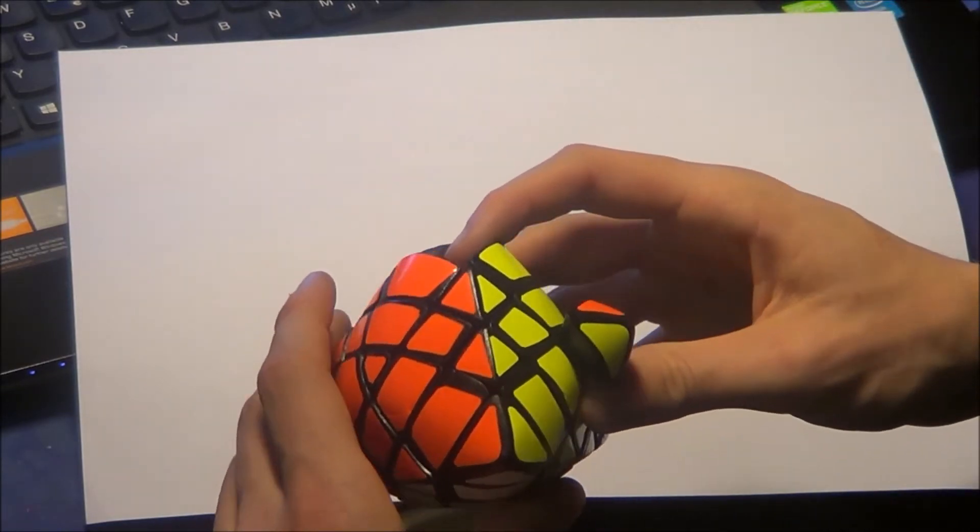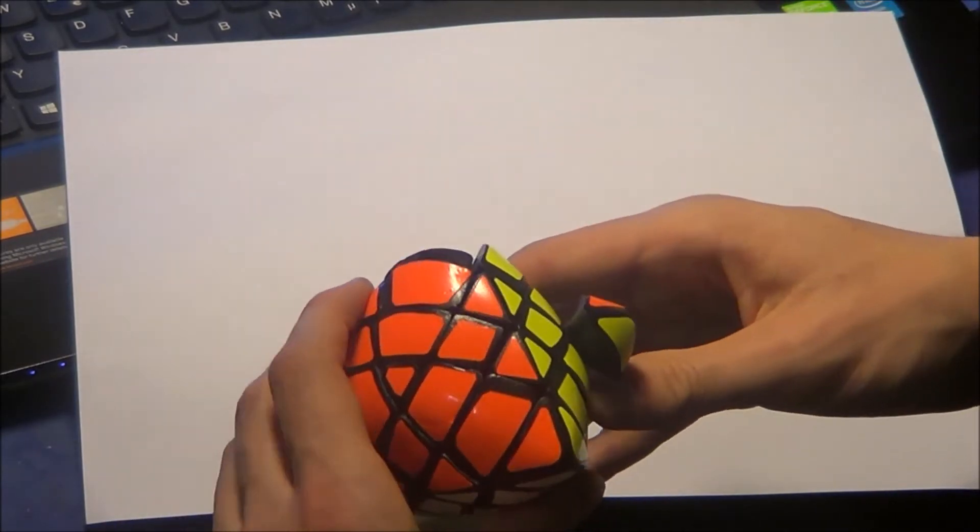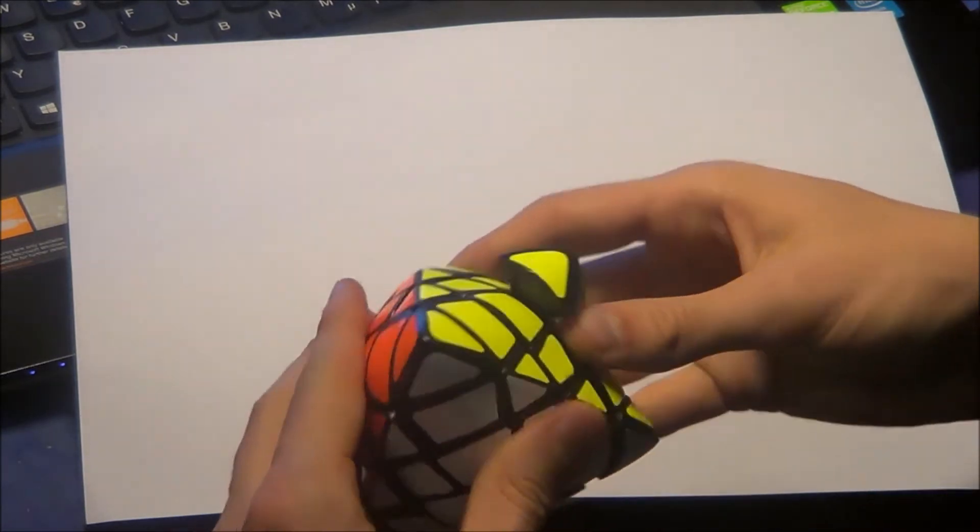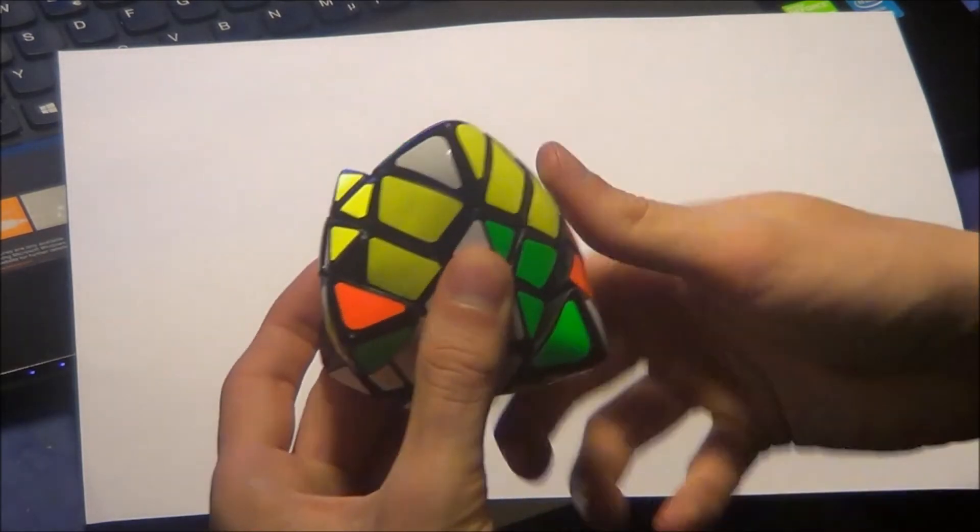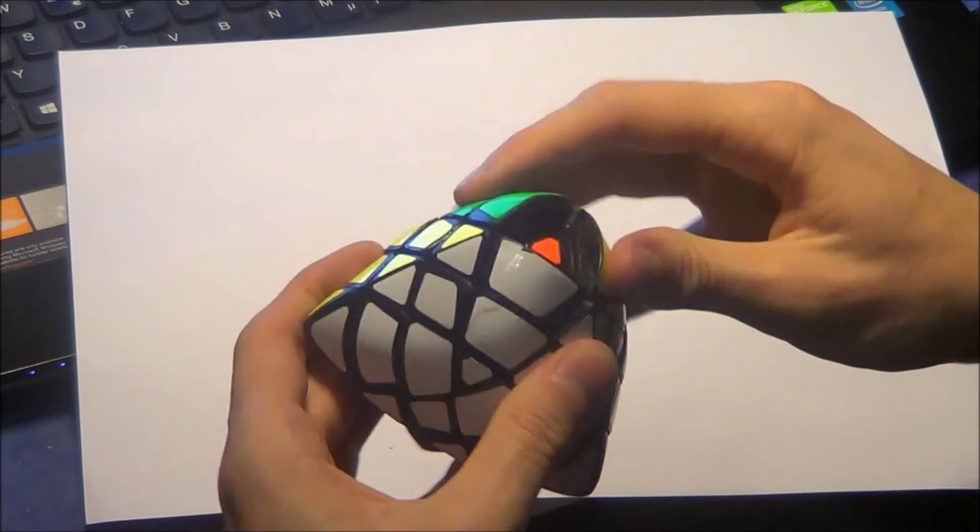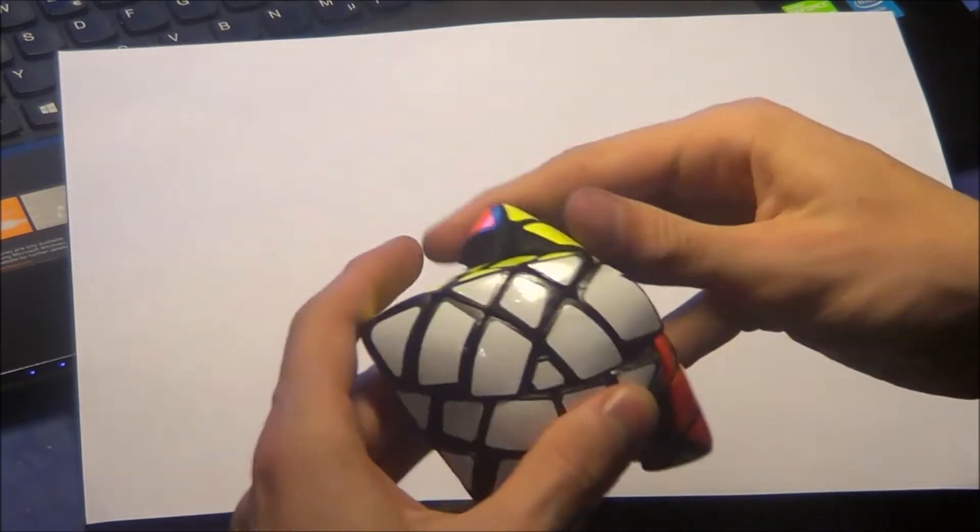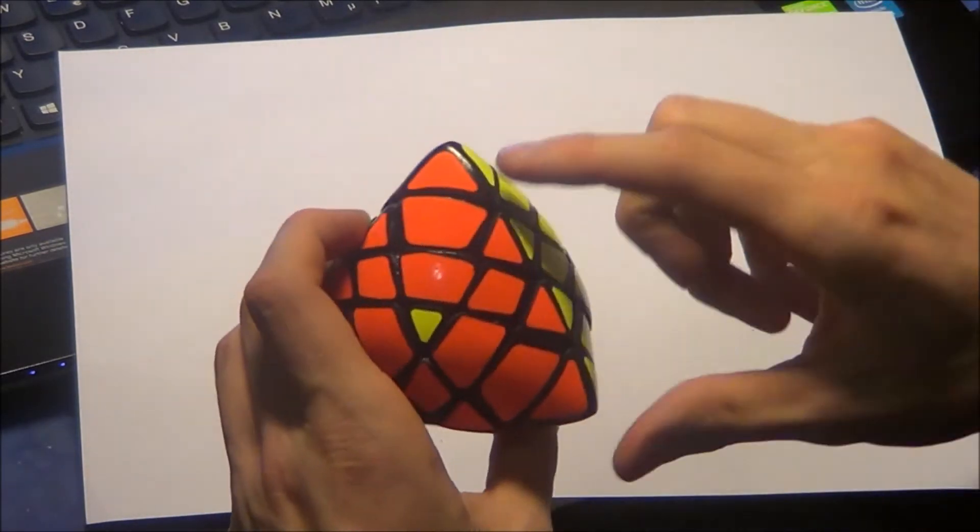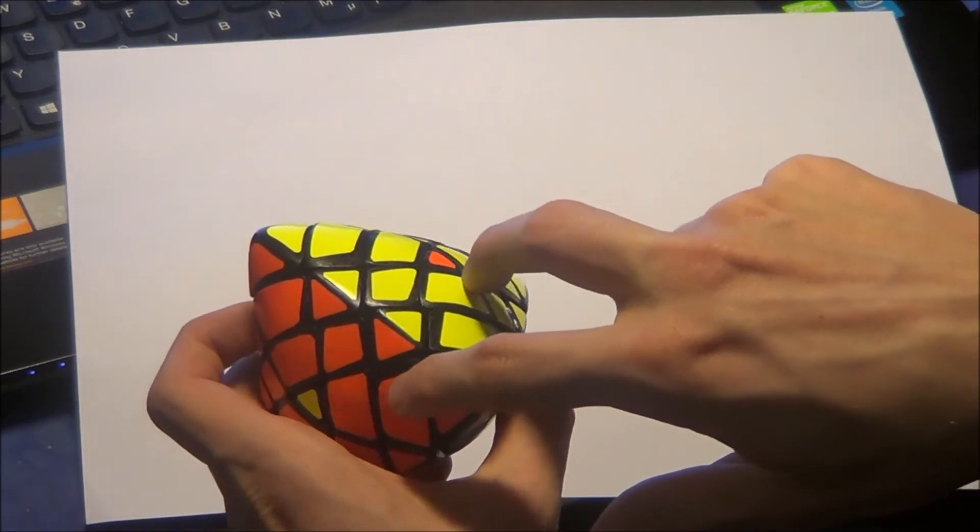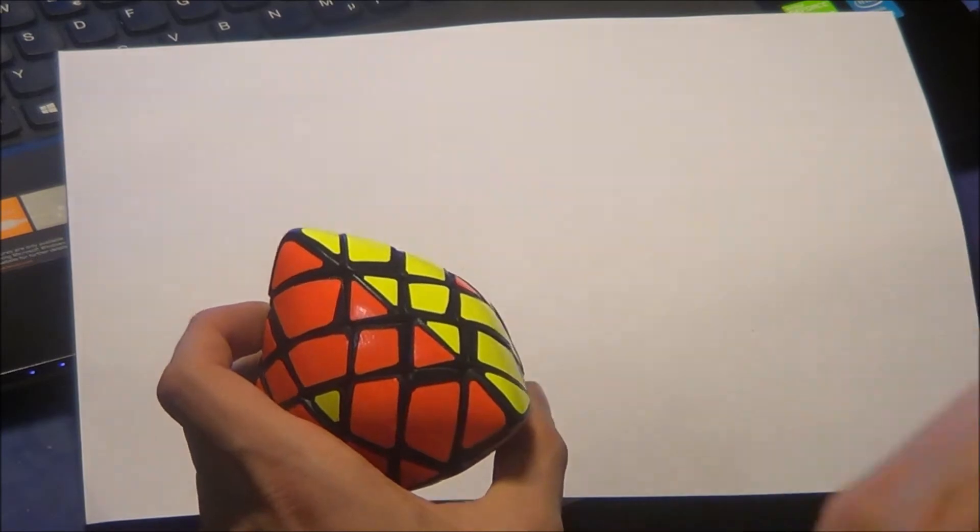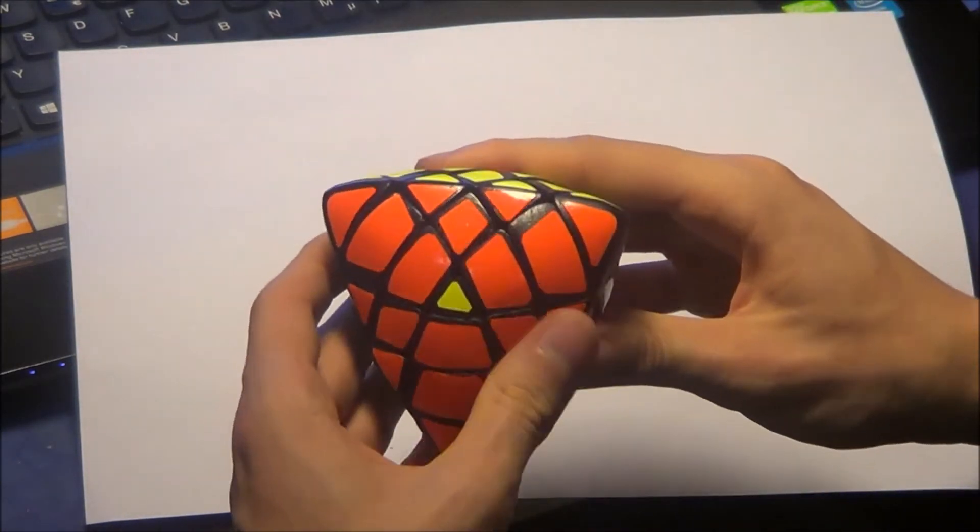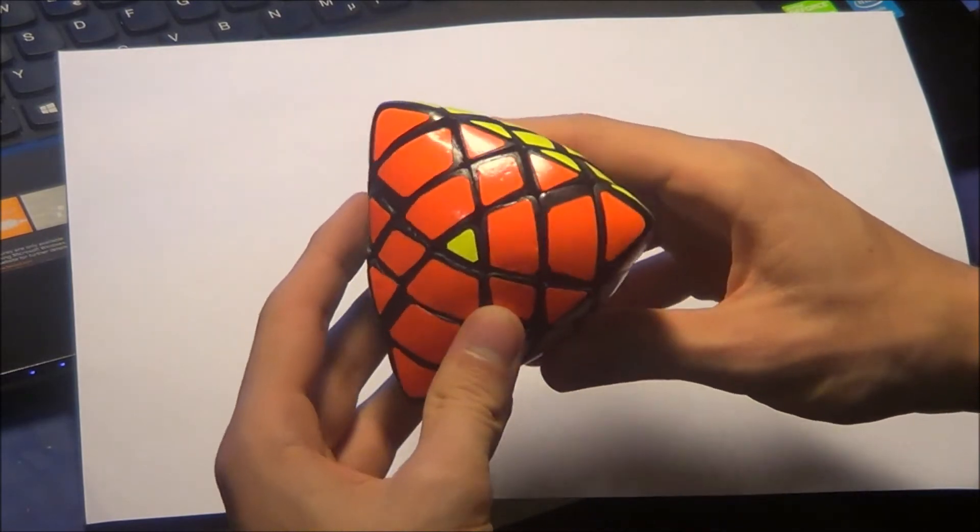So it's easier first of all to bring the big corners here into the right position and the big corners here into the right position with algorithms like this here. So you have these two small corners here directly next to each other, and this is easier to execute. Okay, then let's begin.